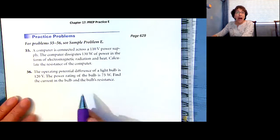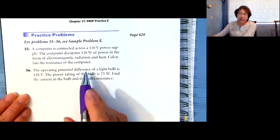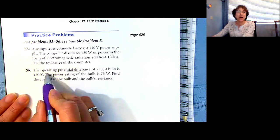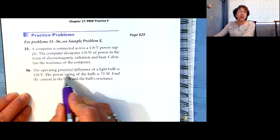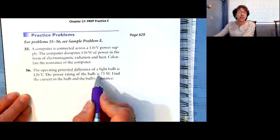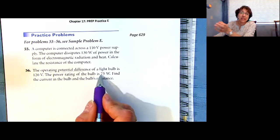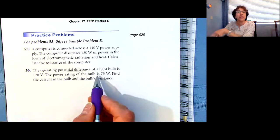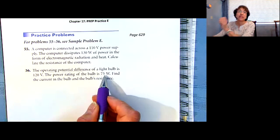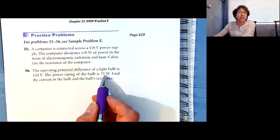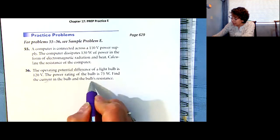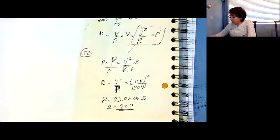Next one, the operating potential difference, that's just another way of saying potential difference is voltage, is 120 volts. The power rating, that's another way of saying the power. Your light bulb could be a 60 watt light bulb, or a 75 watt light bulb. If you exceed that power, then you're going to blow it up. Find the current in the bulb, and the bulb's resistance.